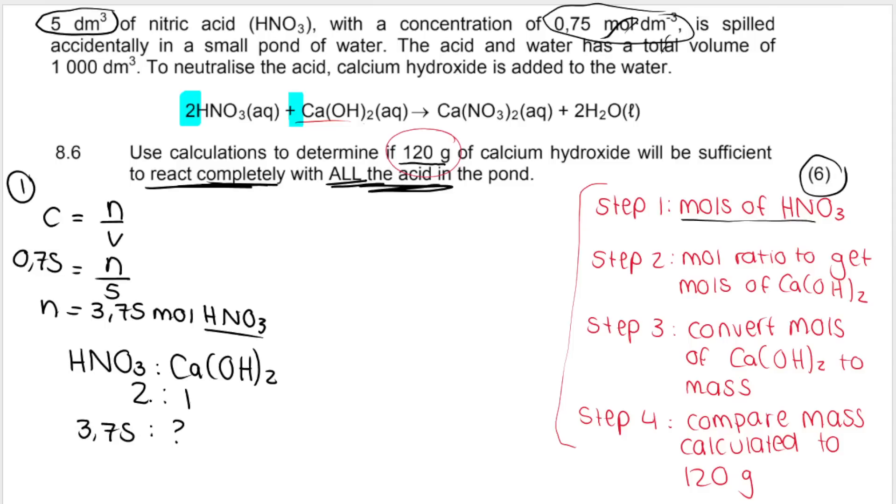You always need to tell your marker or your teacher or whatever what is going into your mole ratio. So HNO3 to Ca(OH)2. Make sure your equation is balanced. Mine is balanced and the mole ratio comes from these big numbers here. So two to one ratio. What we know are the moles of HNO3. So 3.75 and we want to work out these moles. How do you get from two to one? You divide by two. So you're going to have to divide this by two. Therefore, the moles of calcium hydroxide that will be needed in order to use all the acid is 1.875 moles.